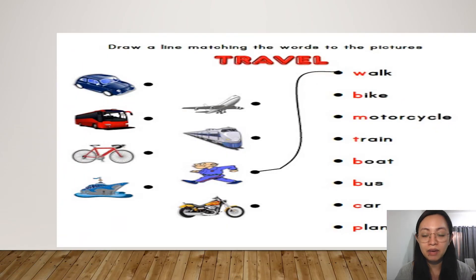And for our activity, before we answer your activity book, draw a line matching the words to the picture. These are the different means of traveling. I want you to pause this video, and after you answer, you play it so that you can check if your answers are correct.